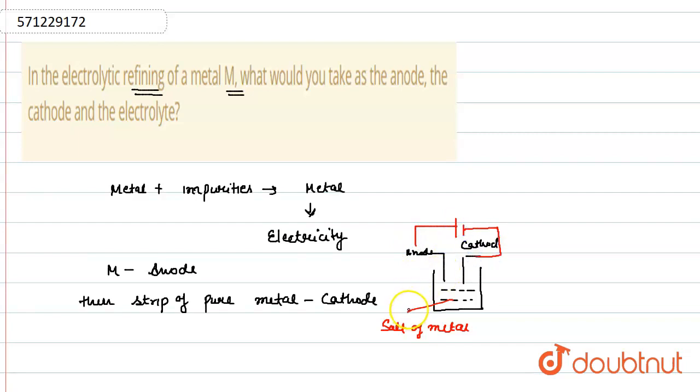Now, what will happen when current is passed through the electrolyte? The impure metal from the anode is dissolved in the electrolyte. At the anode, we have metal plus impurities; the impure metal will dissolve